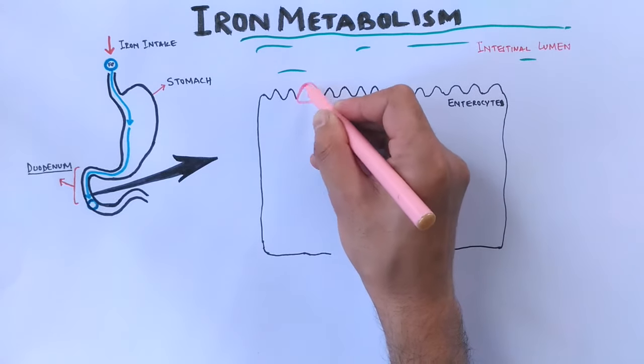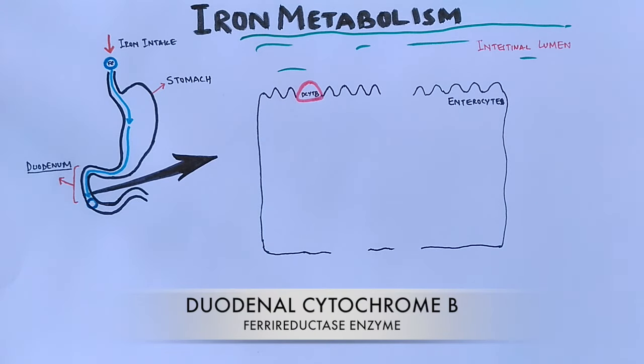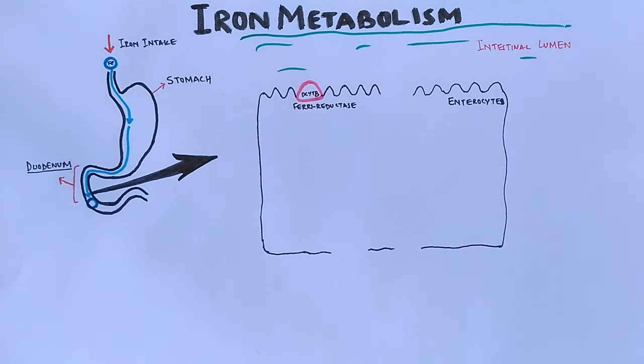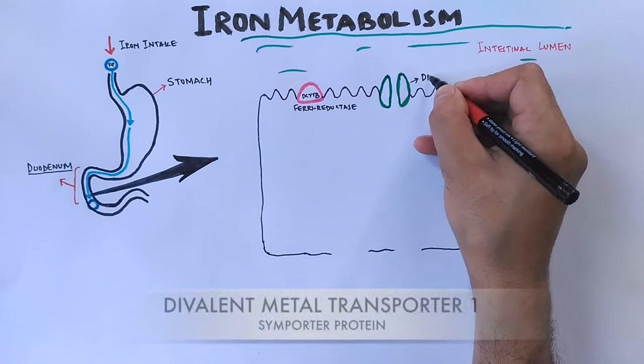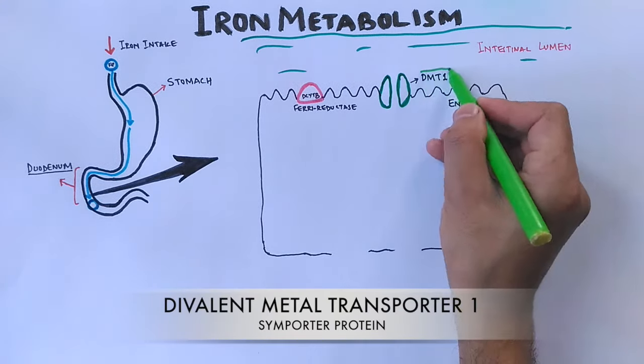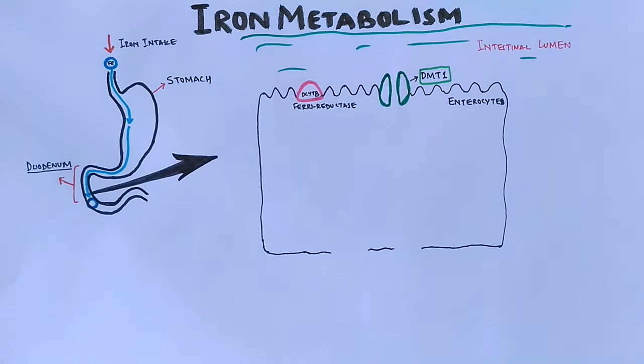First we see it has got DcytB, that is duodenal cytochrome B. It is a ferrireductase enzyme which catalyzes the reduction of Fe3+ ions to Fe2+ ions. Then we have DMT1 protein called divalent metal transporter. This divalent metal transporter transports ferrous ions, that's Fe2+ ions.